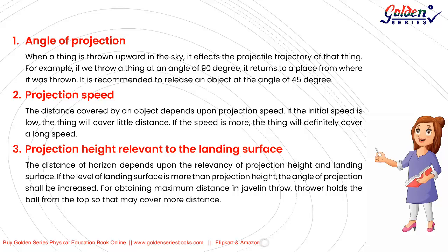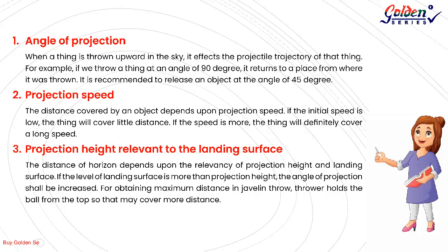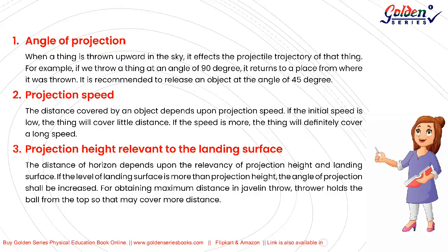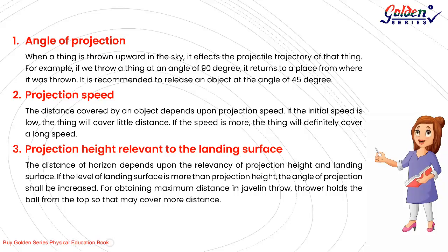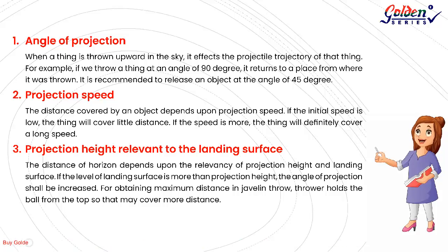2. Projection Speed. The distance covered by an object depends on its projection speed. If the initial speed is low, the object will cover little distance; if the speed is greater, the object will cover a longer distance. 3. Projection Height Relative to the Landing Surface. The horizontal distance depends on the relationship between projection height and landing surface. If the landing surface is higher than the projection height, the angle of projection should be increased. For maximum distance in javelin throw, the thrower holds the javelin from the top to cover more distance.